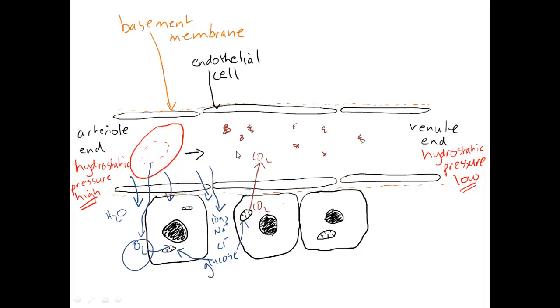What happens to the water potential as we go along? Well our hydrostatic pressure is high at this end. That's fine, that forces fluid out but leaves behind these proteins. And that means overall that the osmotic potential, i.e. the water potential, lowers here. So we get low hydrostatic pressure here and also a lower water potential.